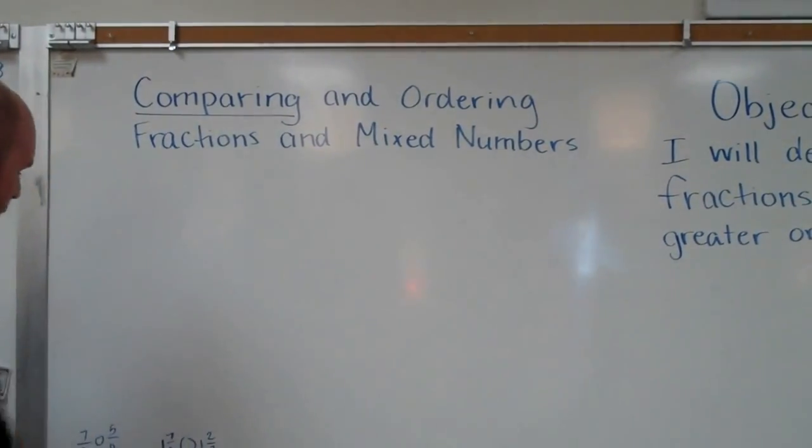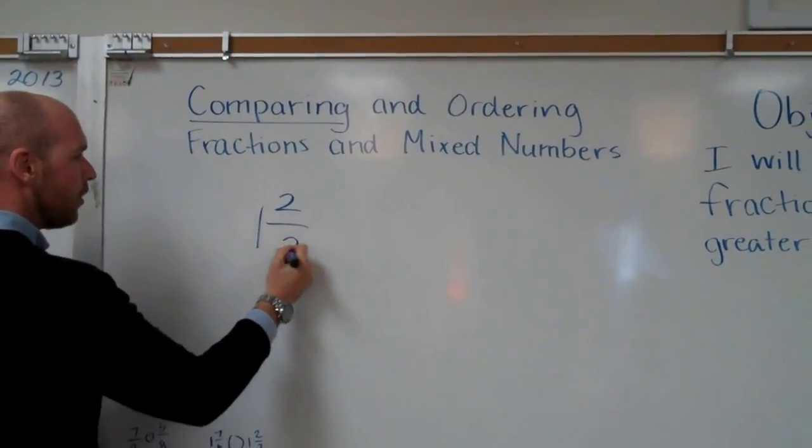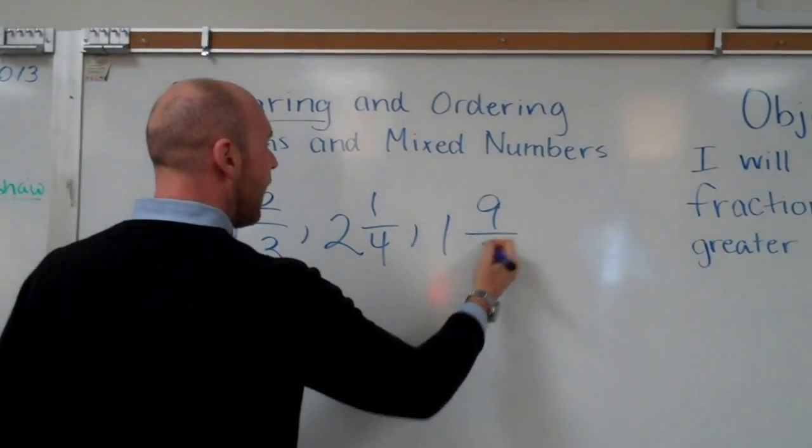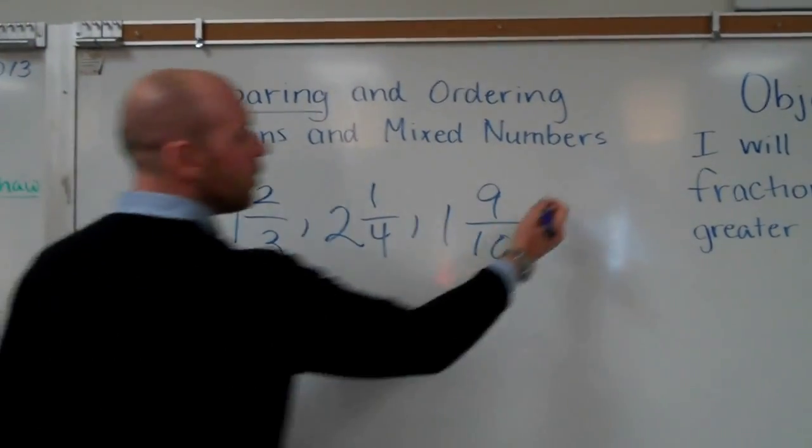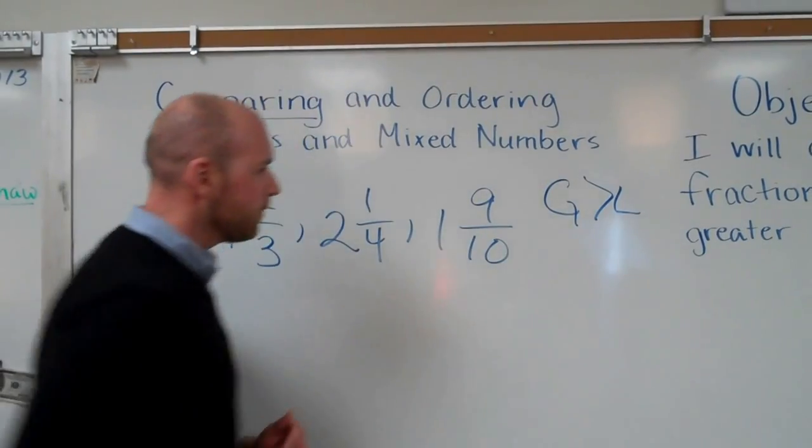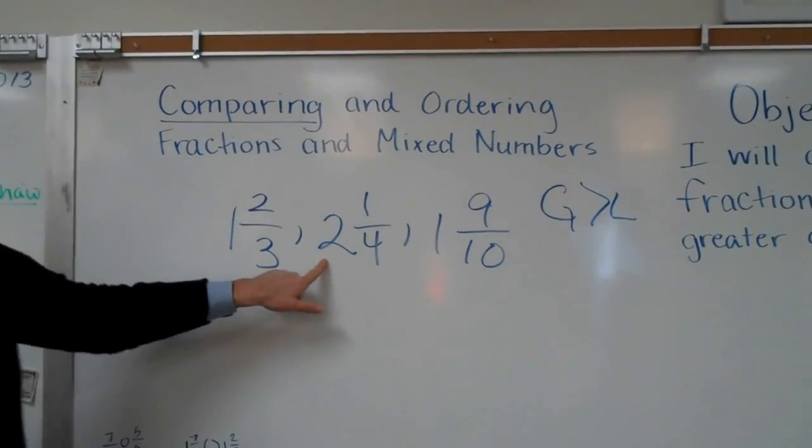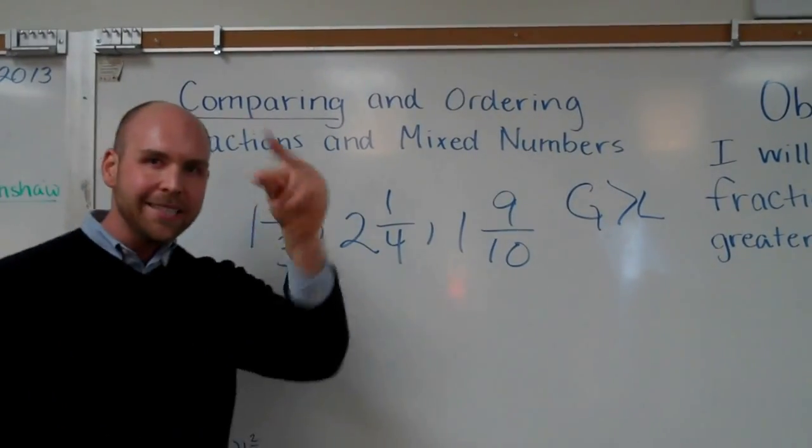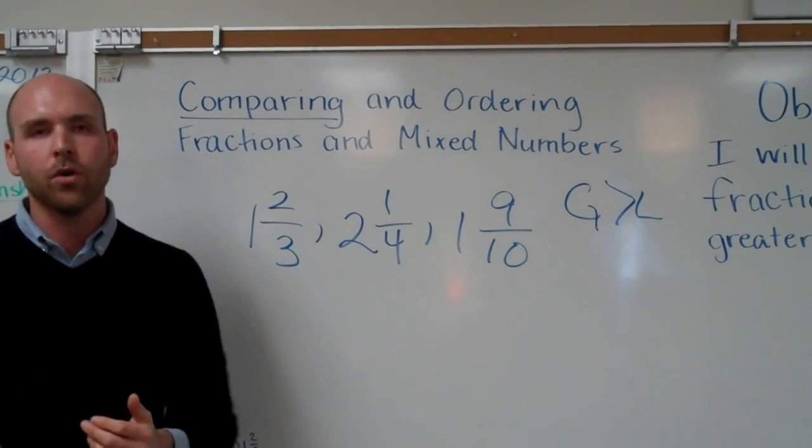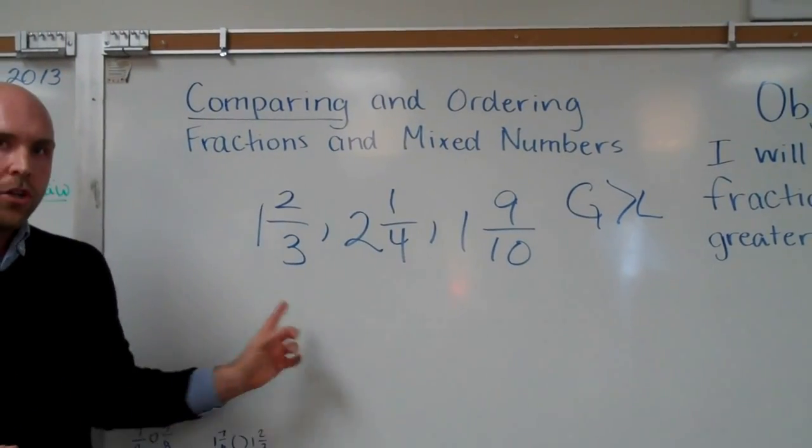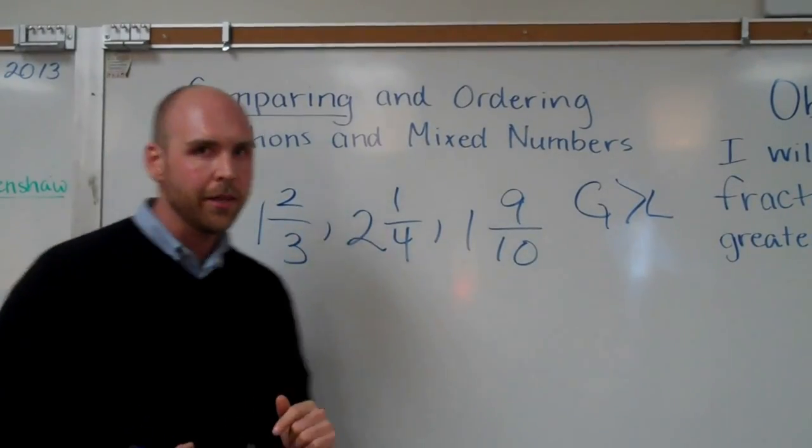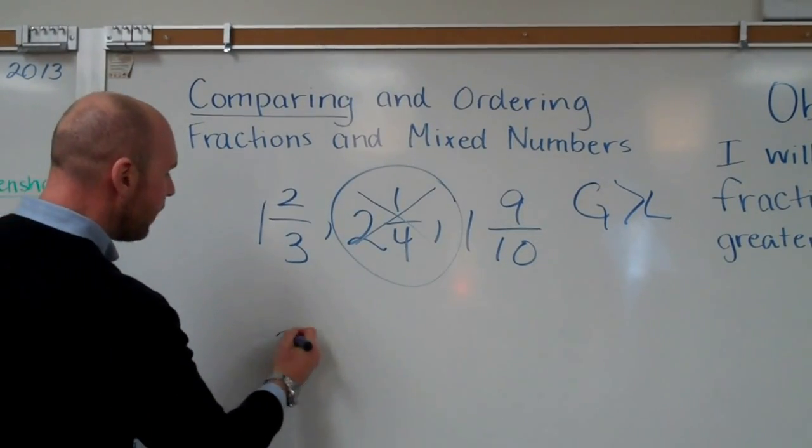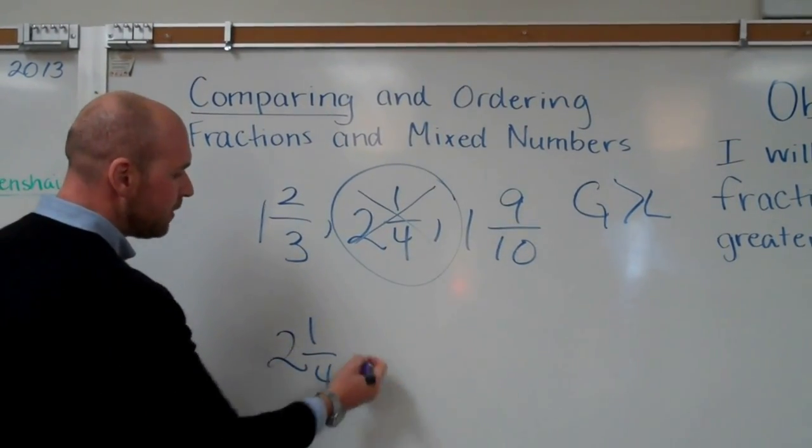Now sometimes you'll get mixed numbers to order, like this. One and two-thirds, two and one-fourth, and one and nine-tenths. And let's say on this one we're going to go greatest to least. Now, when you have mixed numbers, you have a whole number and a fraction. When it's three numbers like this, there should be one that instantly pops out to you as either least or greatest. Hopefully, you're looking at these three numbers and one does not look like the others. And that one should be this one in the middle. Right now, I can take this one out and I know that this is my greatest fraction or mixed number of the three.